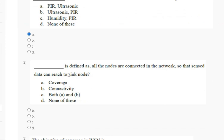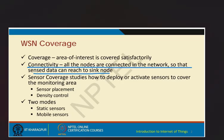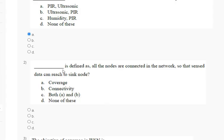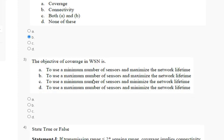Question two: dash is defined as all the nodes are connected into the network so that sensor data can reach to the sink node. Options are: A) converge; B) connectivity; C) both; D) none of these. The explanation: connectivity means all nodes are connected in the network so that sensor data can reach the sink node. The correct answer for question two is option B.